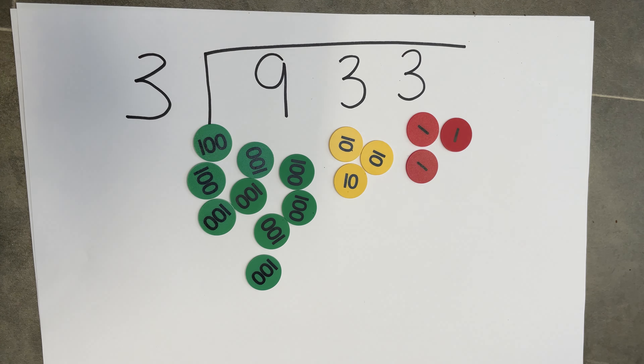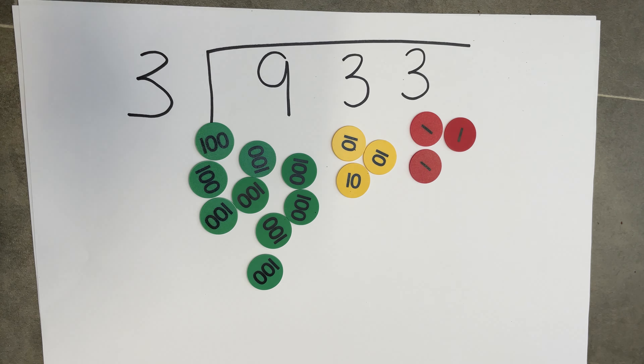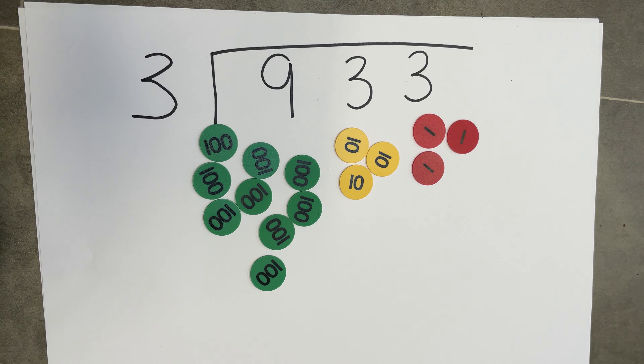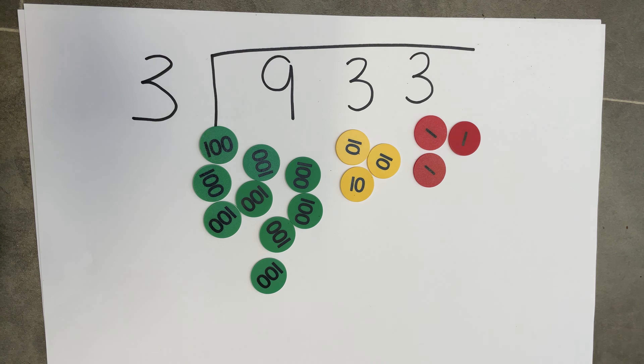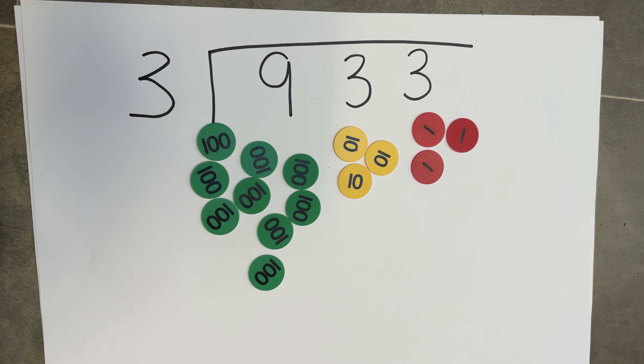I'm going to be showing you how to do short division in year four, also known as the bus stop method. Our calculation is 933 divided by three.